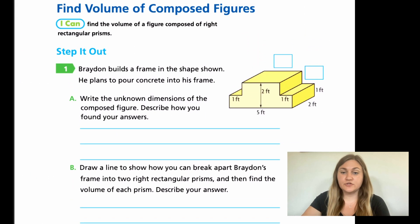We're going to be on page 117 for this lesson. In Step It Out, question number 1, it says Braydon builds a frame in the shape shown. He plans to pour concrete into his frame. That's shown by the yellow figure over to the side. For A, it says write the unknown dimensions of the composed figure and describe how you found your answers. For a lot of you, this is the very first time you've ever seen anything like this. It's not a perfect square. We're going to have to make it two perfect squares and then find the individual volumes and put them back together to make this weird shape.